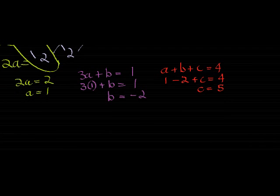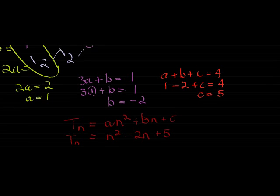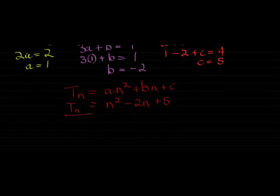And here, if we put these things together in our equation, we get that T_n is equal to 1, let's write out the whole thing, a n squared plus b n plus c, where a is equal to 1. So n squared, b is negative 2, so it's negative 2n, and c is equal to plus positive 5. And there we go. That is the general term for our sequence.